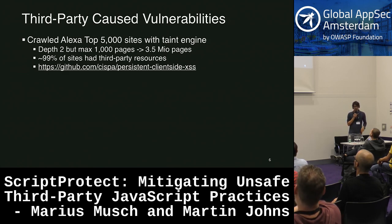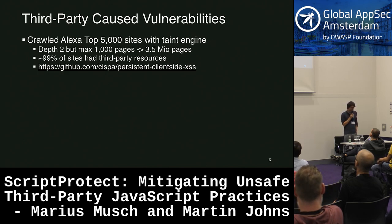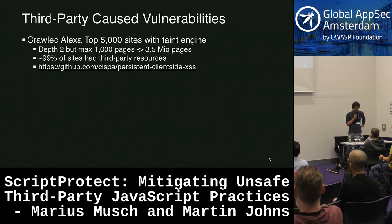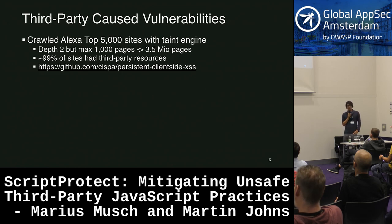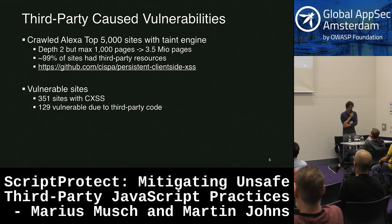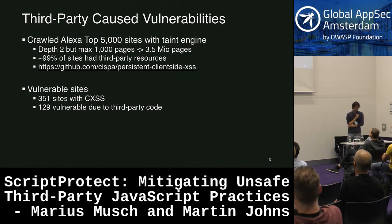What did we actually do? We looked into the Alexa top 5,000 websites. We have a taint engine — which has since been released publicly to GitHub — and we crawled up to 1,000 sub-pages on each of the sites. We ended up with millions of pages which we analyzed with this automated taint browser, and it's able to identify client-side cross-site scriptings automatically. 99% of the sites had third-party resources.